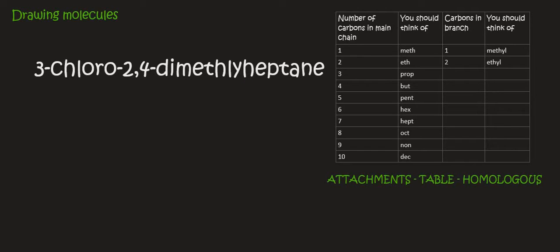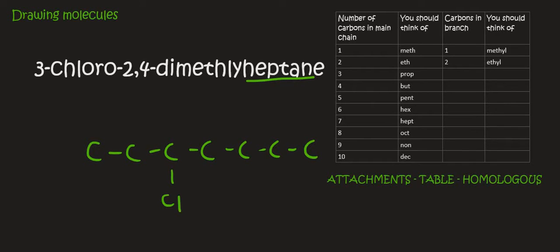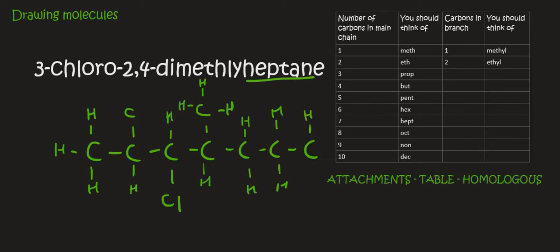This one's quite interesting. We look at the 'hept' part — so it's heptane, that's 7 carbons. On 3 there's a chlorine. On 2 there is a methyl. And then on 4 there's also a methyl. The rest of it is just hydrogens. You want to make sure that each carbon is surrounded by 4 attachments. There's your methyl, and there's the other methyl on carbon 2. There we go — there's your other attachment. And so that's that molecule.